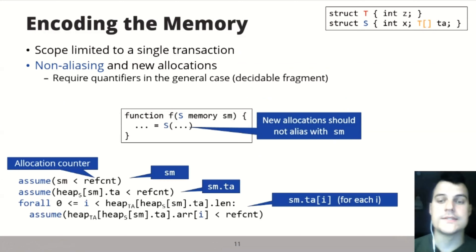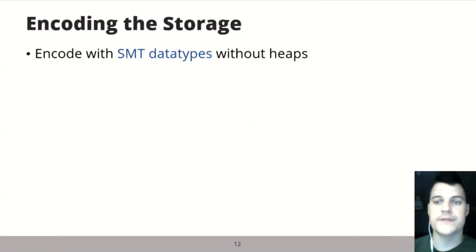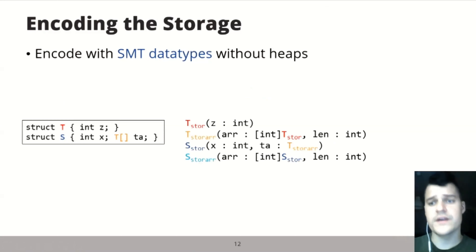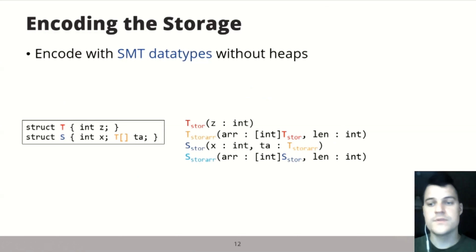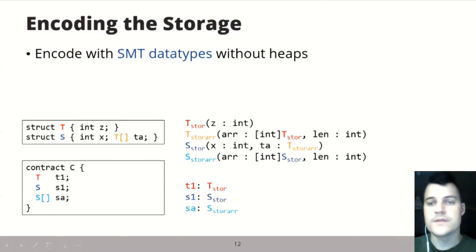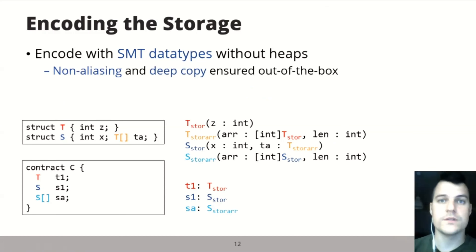This requires quantifiers in general, but it is limited to a decidable fragment. Now let's move on to storage, which has pure value semantics, so we will not use heaps. For storage, the main difference in encoding is that nested structs or arrays are not pointers but the actual data types — the T array now actually maps integers to actual T instances rather than pointers. State variables like T, S, or an S array simply become variables of these data types.